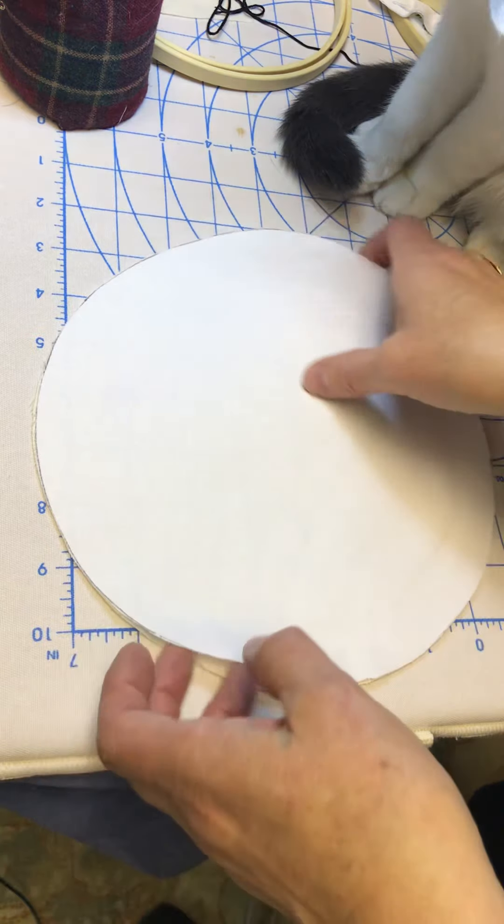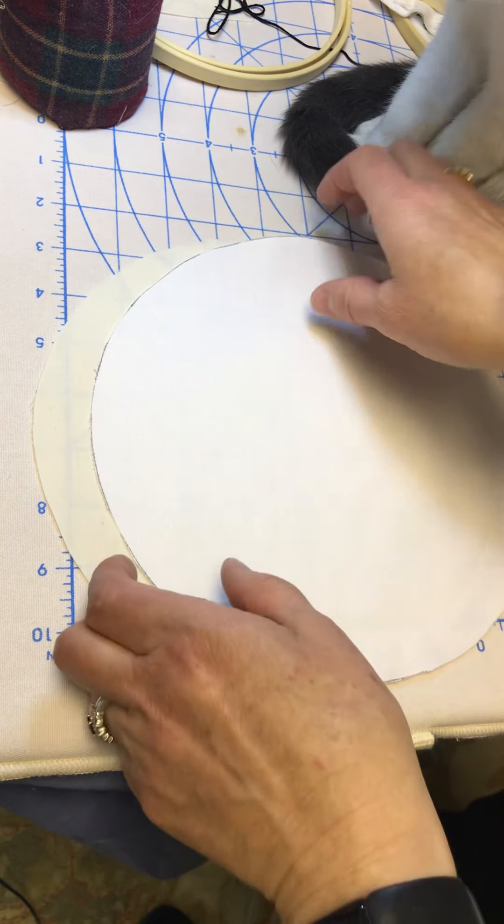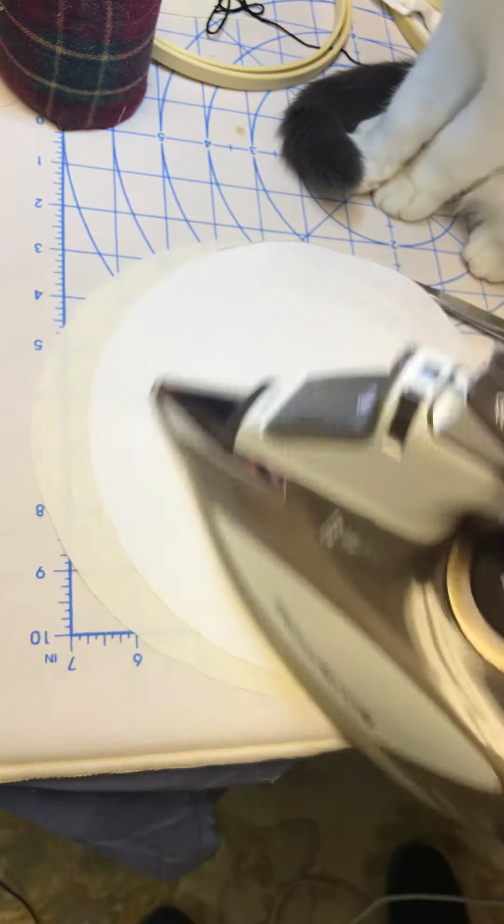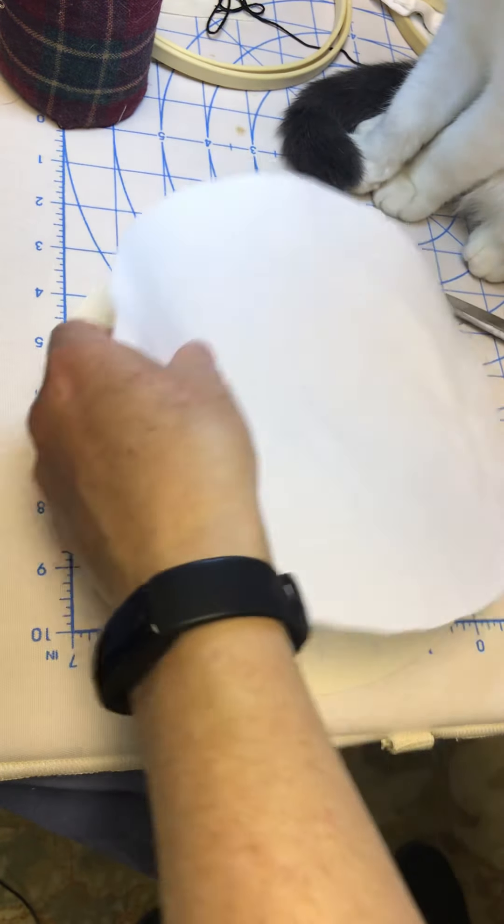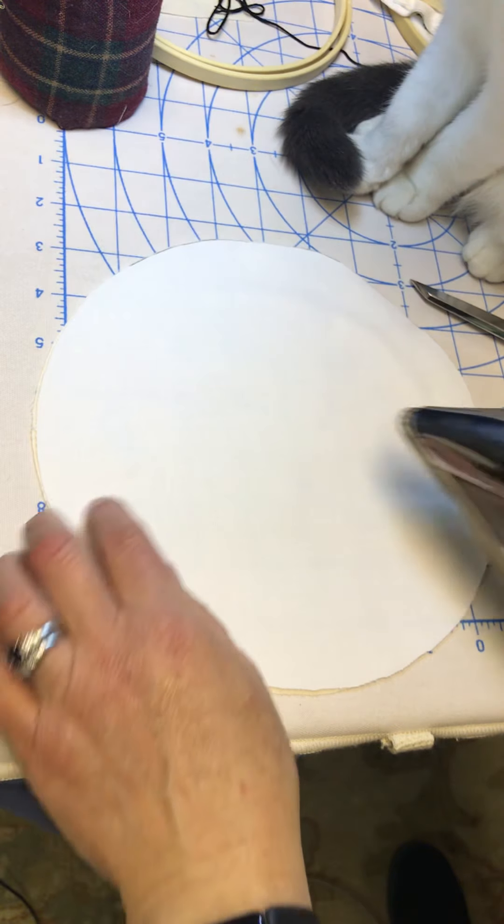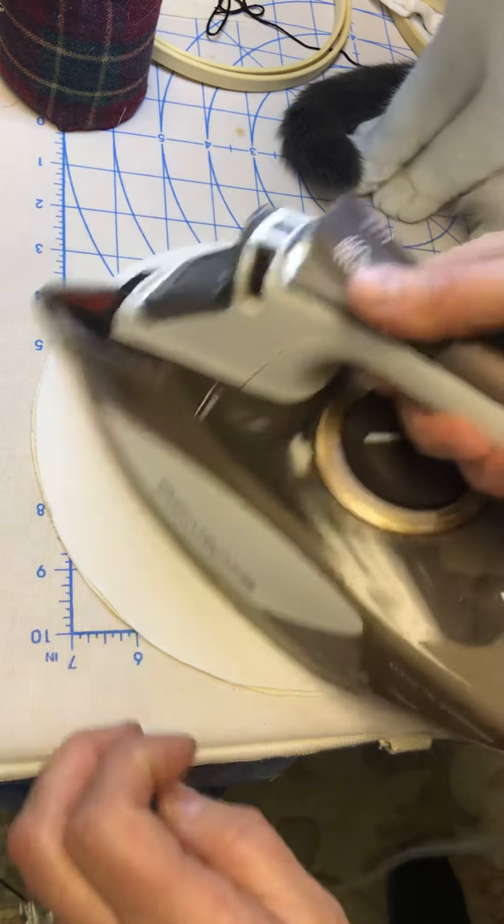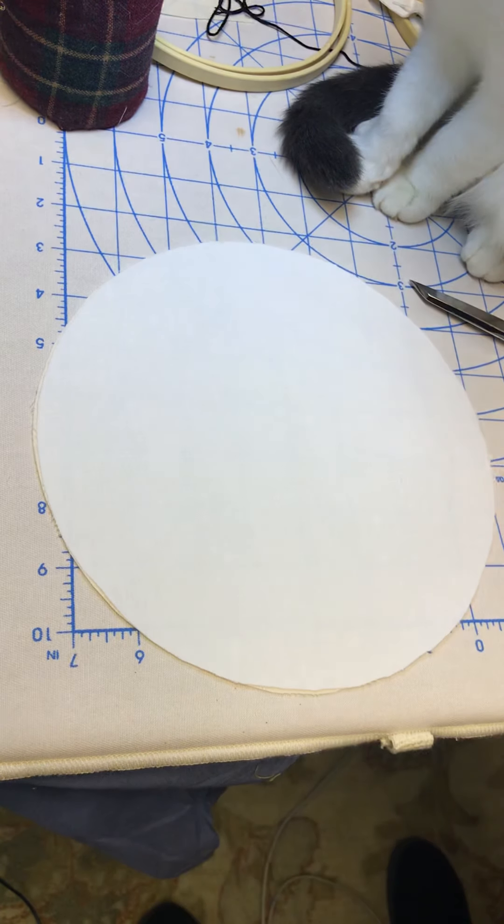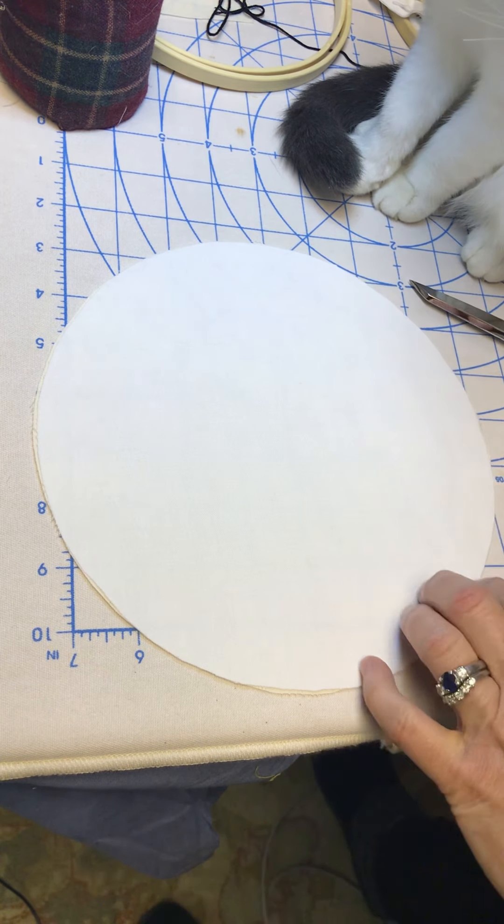And if you see a little bit of black on that line, I'll show you how it just disappears with the iron. Just, it's gone. So it's a handy little gadget for embroidery and tracing your designs. So there's our fabric.